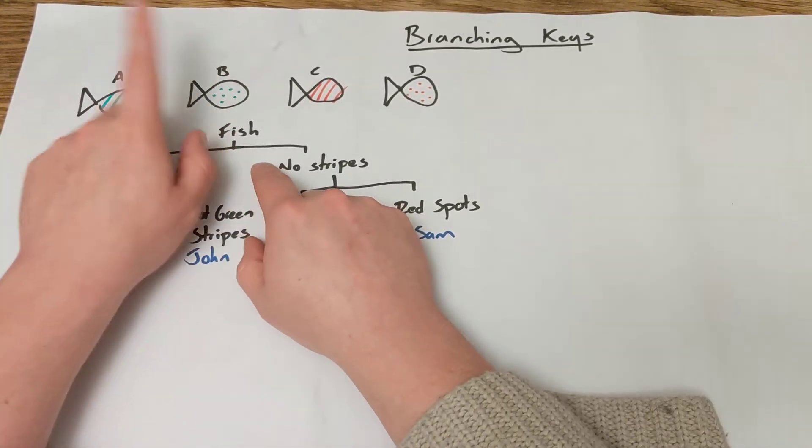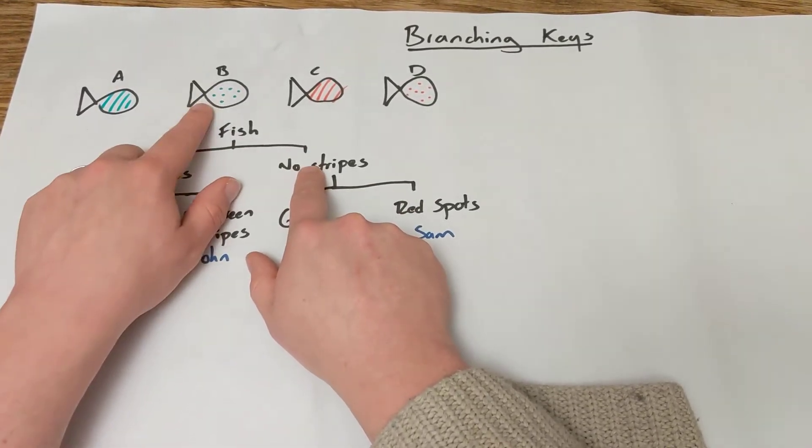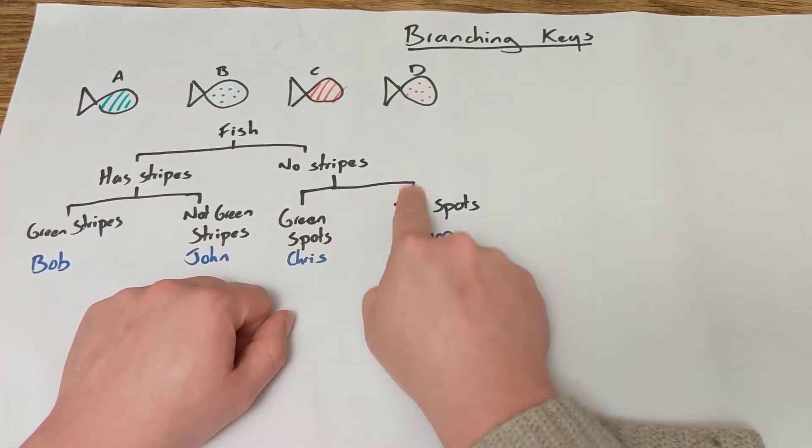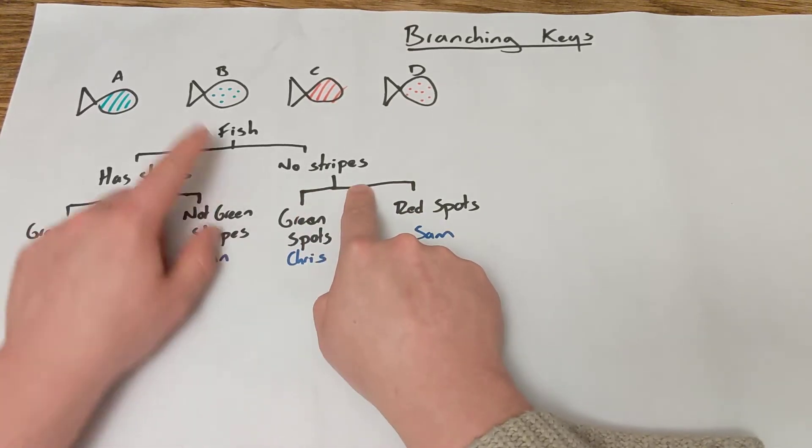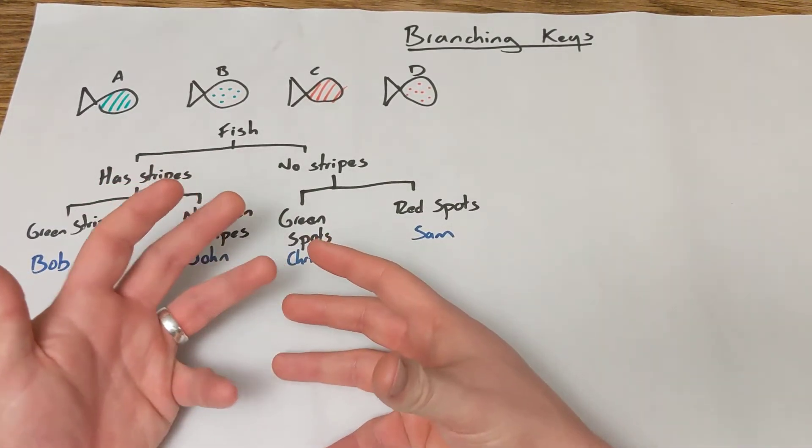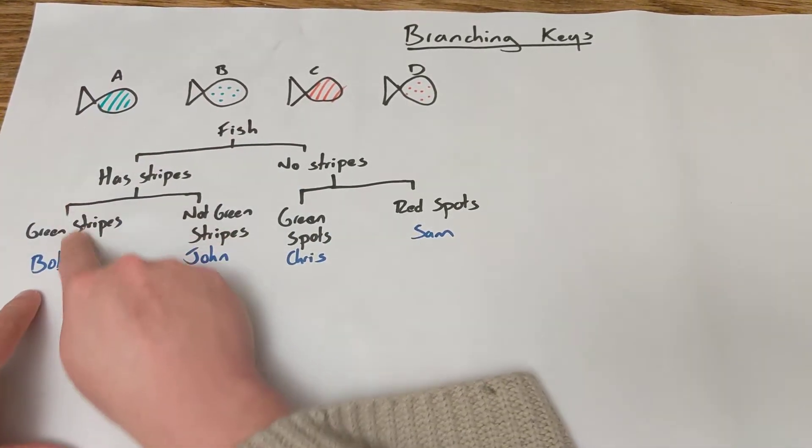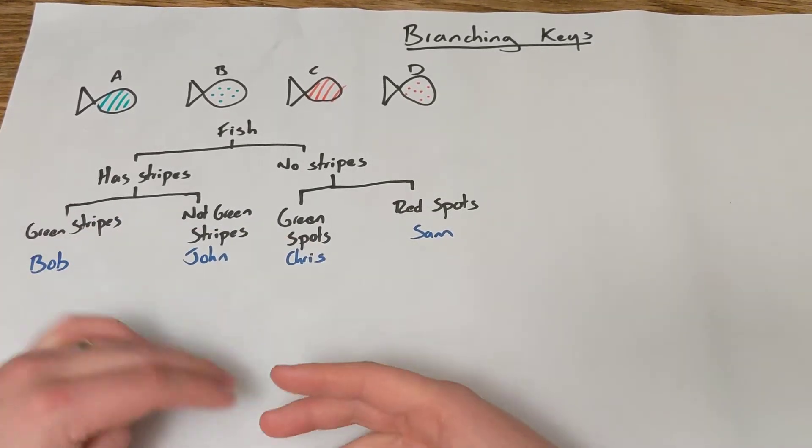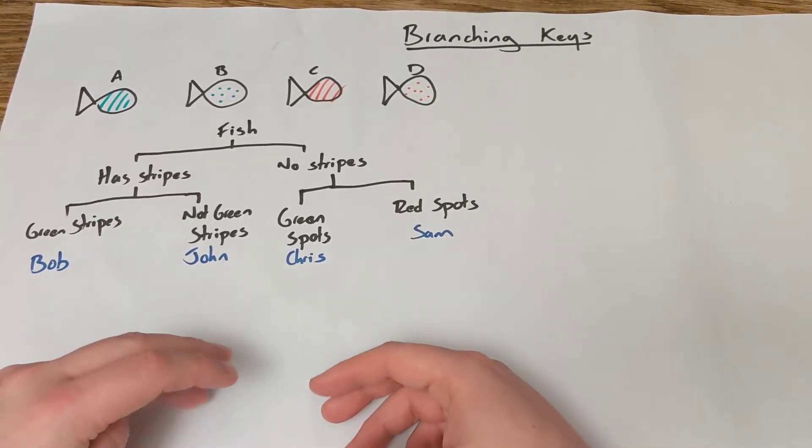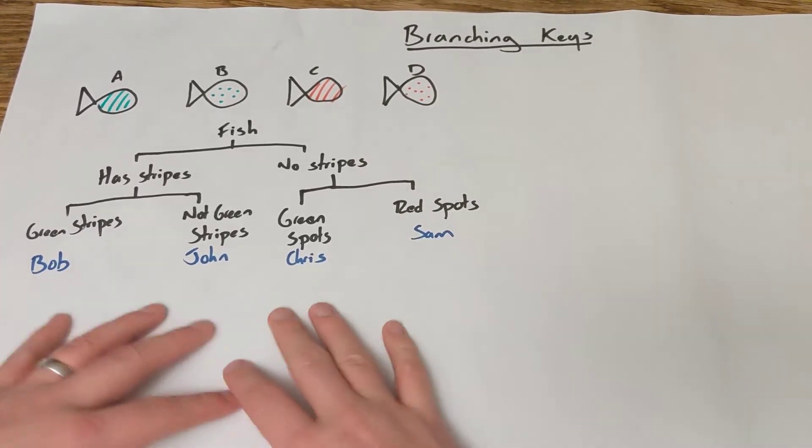So let's pick another fish. Let's go with B. So fish, now we have has stripes or no stripes. Well, that's got no stripes, so we go down to this branch. And then our options on this branch are red spots or green spots. So our fish has green spots, so that fish is Chris. So that's how these branching keys work. It's basically a decision at each branch. You make that decision and then you just follow that down until you get to the end where something has been identified.